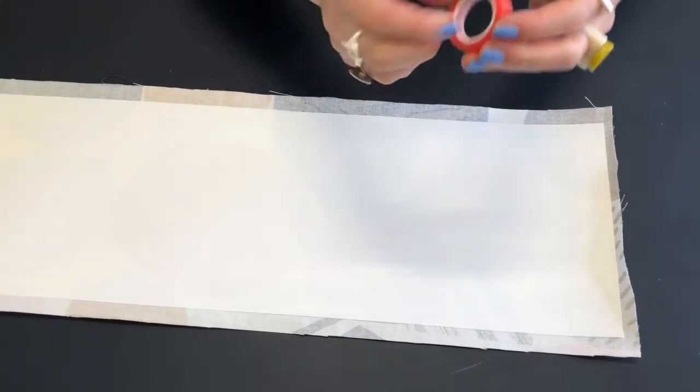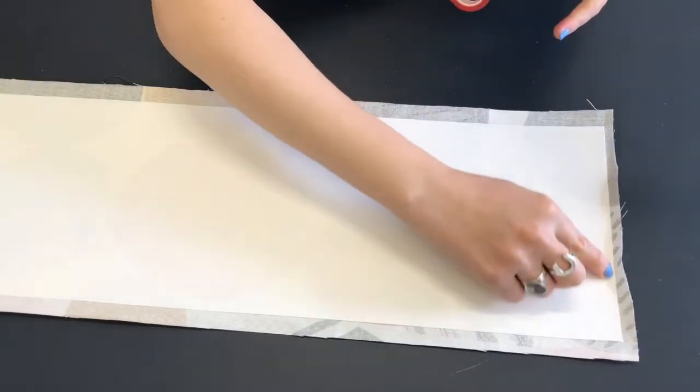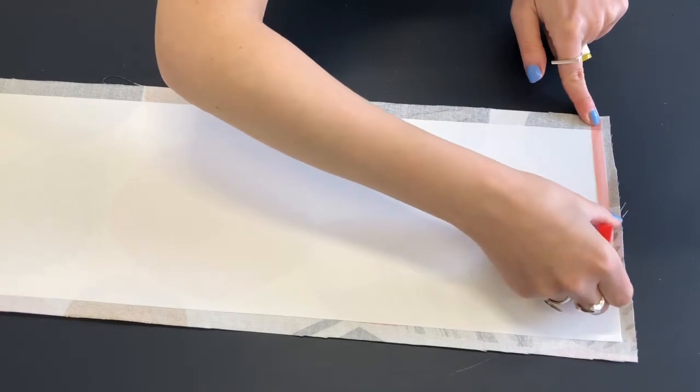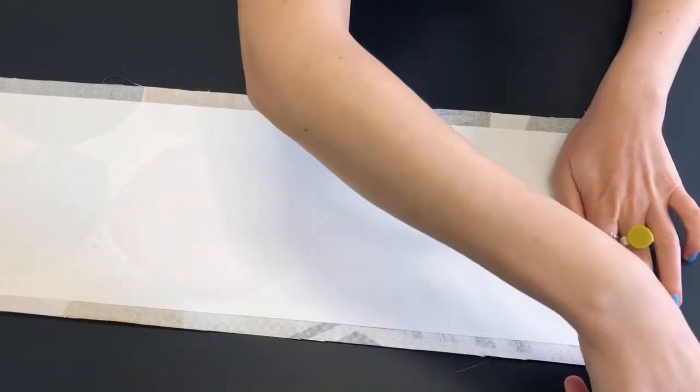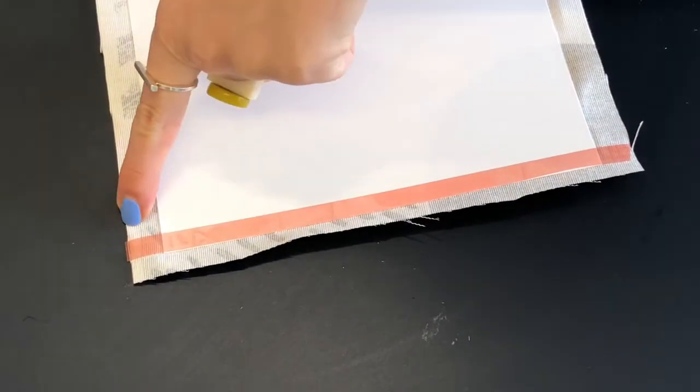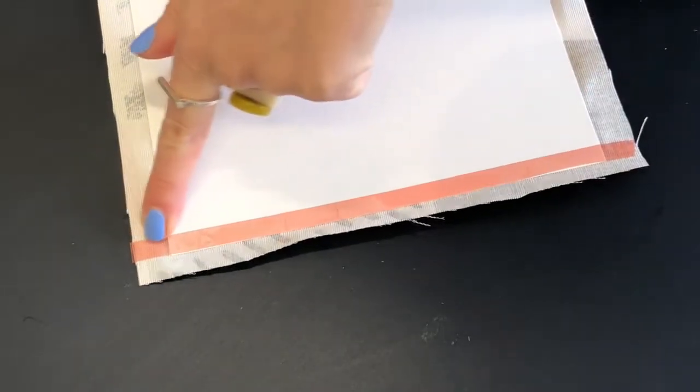So I'm going to take my Tessa tape and I'm going to stick a piece of tape on the edge of the plastic here and from edge to edge. I'll show you what I mean.